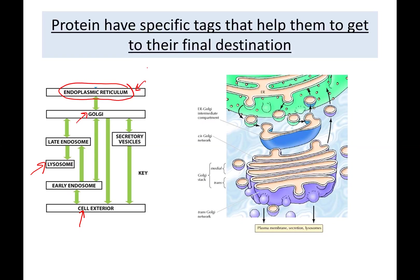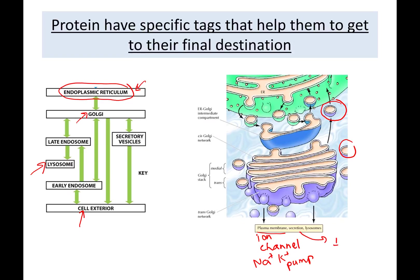Vesicles travel from the ER to the Golgi, then bud off the Golgi and fuse with the plasma membrane, carrying proteins or lipids. For example, ion channels at the plasma membrane — a specific example being the sodium-potassium pump — and for secretion, insulin and other peptide hormones are examples that are secreted out.